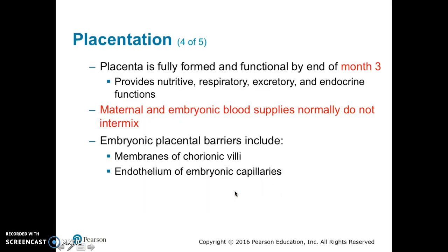The placenta is fully formed and functional by the end of month three. It provides nutritive, respiratory, excretory, and endocrine functions. The maternal and embryonic blood supplies normally do not intermix. The embryonic-placental barriers include the membranes of the chorionic villi and the endothelium of the embryonic capillaries.